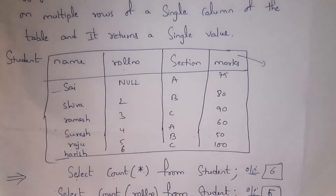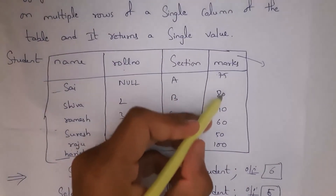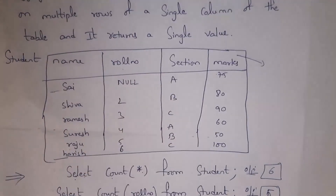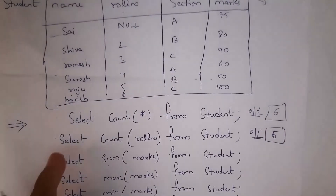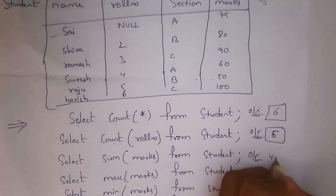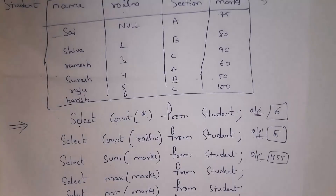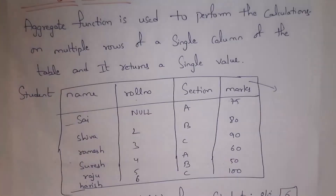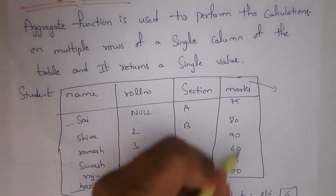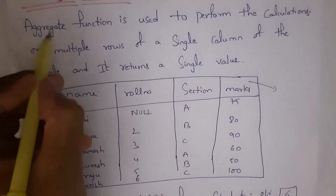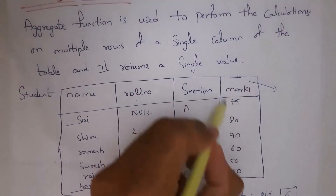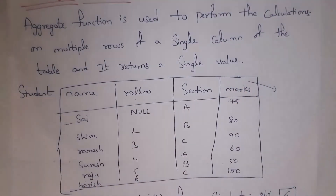Whenever I write this code and press Enter it will perform addition on all rows in the marks column: 75 + 80 + 90 + 60 + 50 + 100 = 455. So the output will be 455. Aggregate functions display only a single value as output — they perform calculations on multiple rows of a single column and return one value.